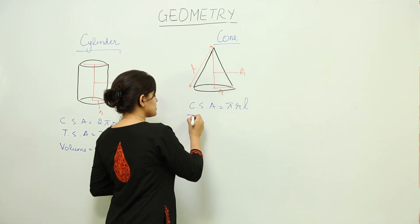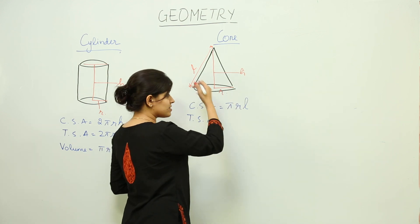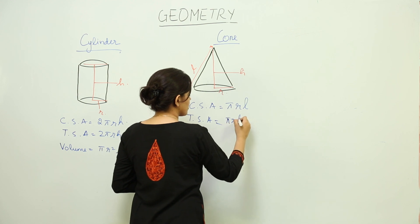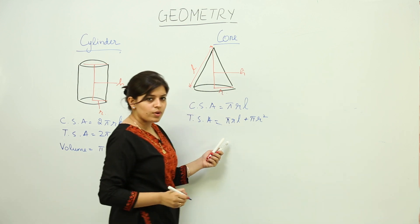The total surface area of this cone is the curved surface area plus the area of this lid. That is πrL plus πr².